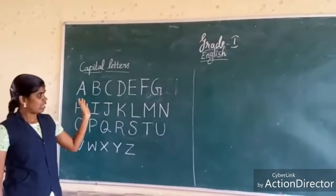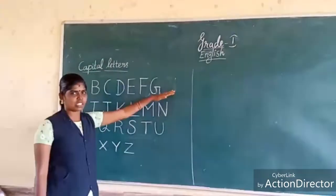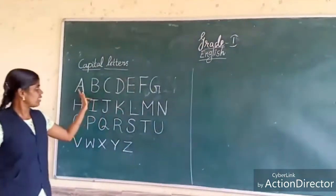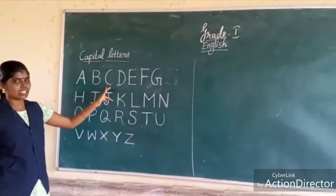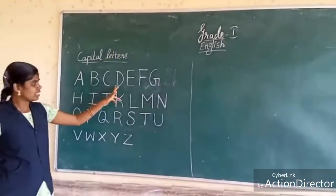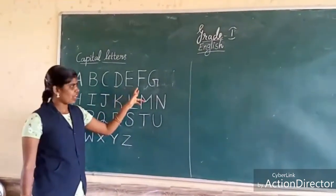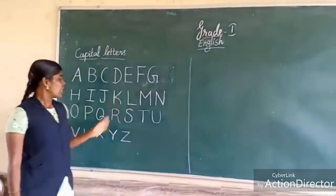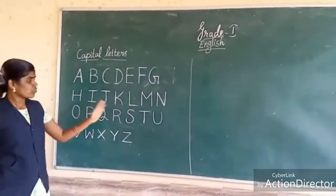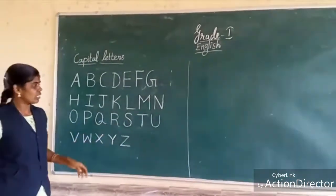In the previous class we saw up to G: A, B, C, D, E, F, G. Now we are going to see all the remaining letters.